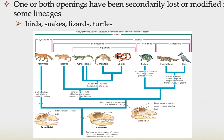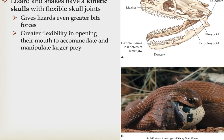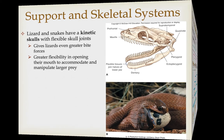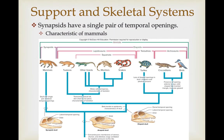In birds, snakes, lizards, and turtles, the temporal openings have been secondarily lost or modified. Lizards and snakes have kinetic skulls with very flexible skull joints, giving lizards even greater bite forces and allowing snakes and lizards greater flexibility in opening their mouths to accommodate larger prey. On the other branch of the tree, the synapsids have a single pair of temporal openings, and this is the characteristic seen in mammals today.